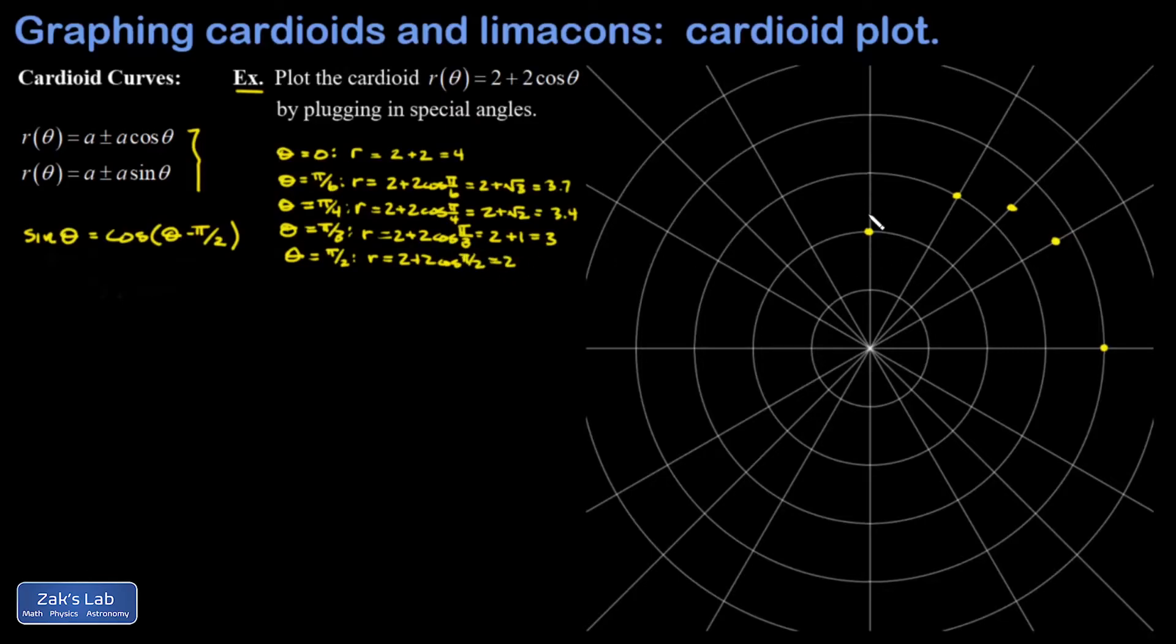We're starting to get a sense for how the curve is swept out as theta increases. We're going to go all the way from 0 to 2π because the cosine is periodic with a period of 2π. So let's speed things up a little.